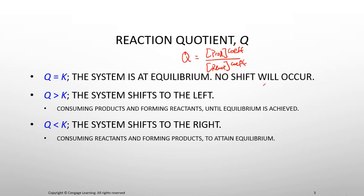Q can be equal to K, in which case the system is already at equilibrium — this is very rare, and no shift would occur. If Q is greater than K, then the system is going to shift to the left, meaning there is too much product present, so more product molecules will collide and recreate the reactants. Mathematically, if Q needs to equal K, we need Q to become a smaller number — reducing the numerator and increasing the denominator until their ratio equals K.